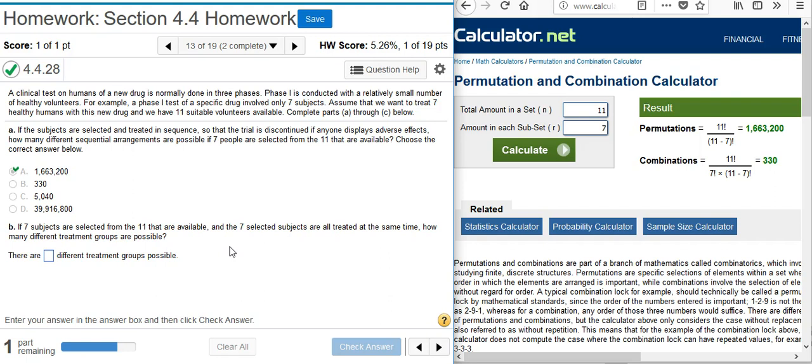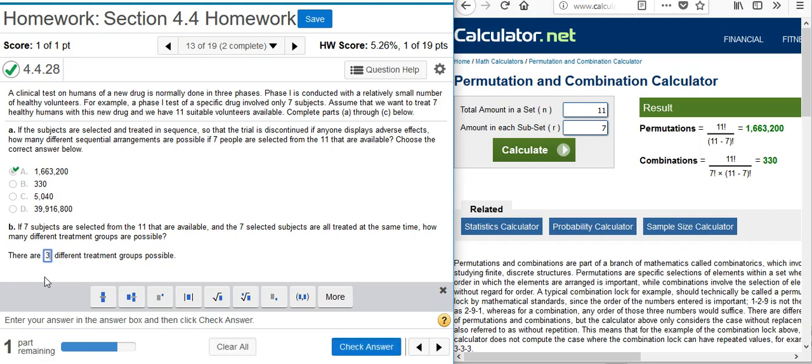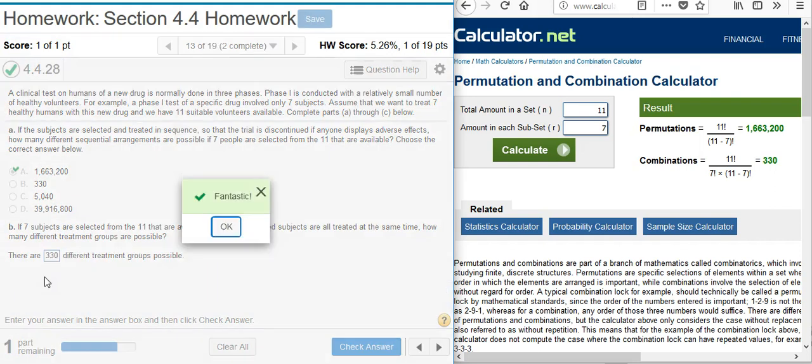Well, if we're treating all the people at the same time, obviously the order doesn't matter, so here we want combinations. So here we're going to calculate combinations. This is the number we want here from the online calculator. We've already calculated it, so I'm just going to put that number 330 into my answer field. Fantastic.